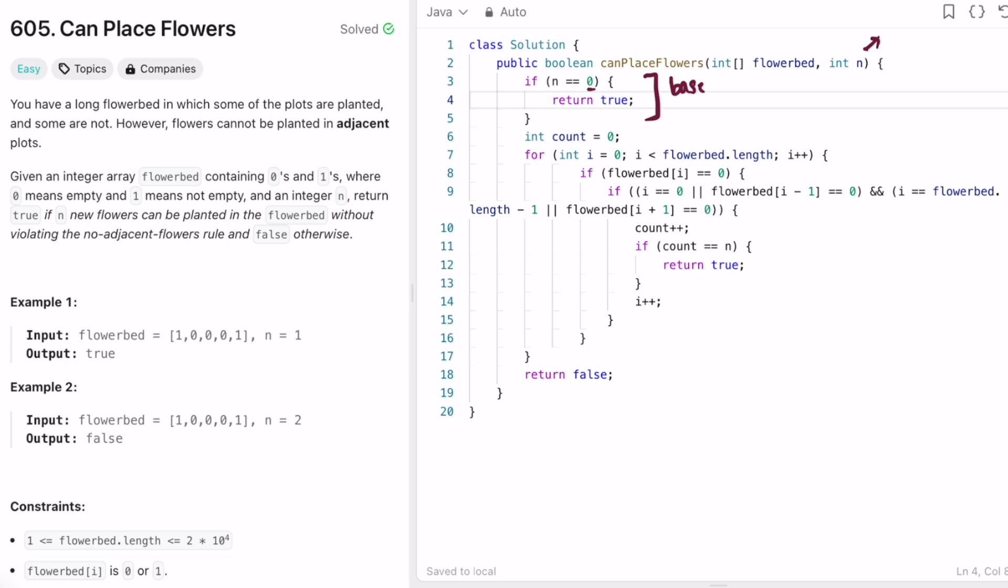Now I'm using a variable count to count how many new flowers we have placed, and later I'm going to check that count with n so that if they're both equal we return true. So I'm using a for loop to iterate through the input array flowerbed from zeroth index till the end, starting from left to right. And we can only place a flower if there is zero in that place.